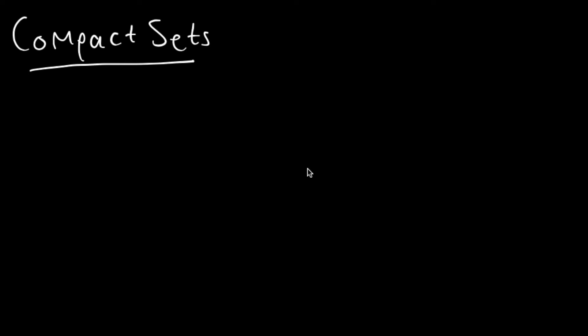In this video I am going to go over the definition of a compact set. To understand what a compact set means, you are going to need to understand a couple of other concepts. One of these concepts is the epsilon neighborhood, which is usually denoted with a specific symbol and notation.